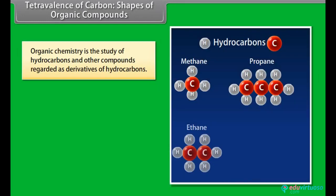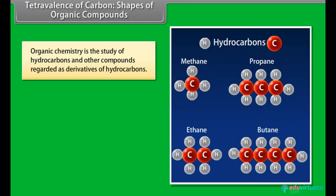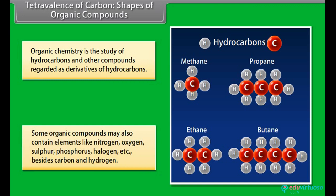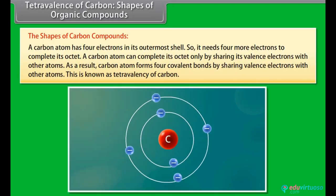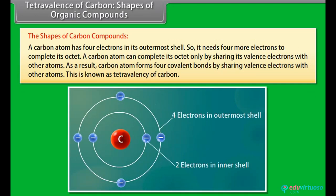You will also be able to represent organic compounds in 3D, classify organic compounds, and describe nomenclature of organic compounds. Organic chemistry is the study of hydrocarbons and other compounds regarded as derivatives of hydrocarbons. Some organic compounds may also contain elements like nitrogen, oxygen, sulfur, phosphorus, halogens, etc., besides carbon and hydrogen. A carbon atom has four electrons in its outermost shell, so it needs four more electrons to complete its octet.